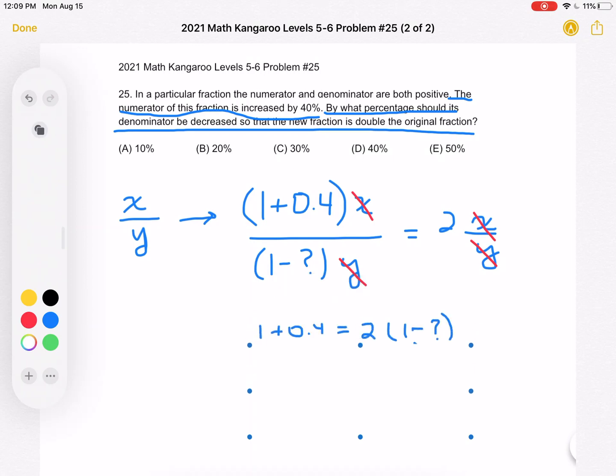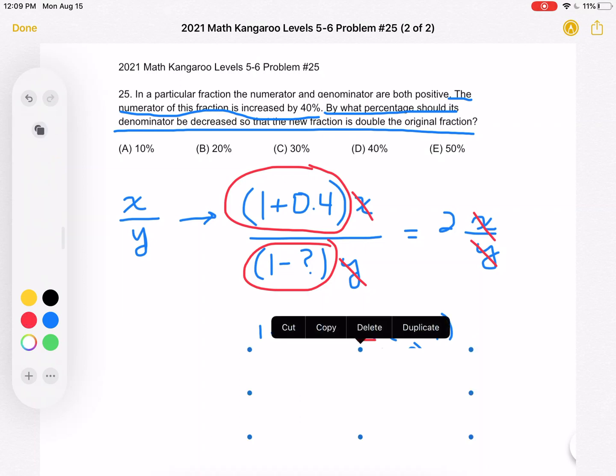And then what we get is this equation. We have 1 plus 0.4 must be equal to 2 times this quantity, 1 minus the question mark which we're trying to solve for.